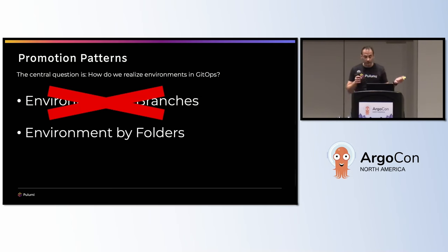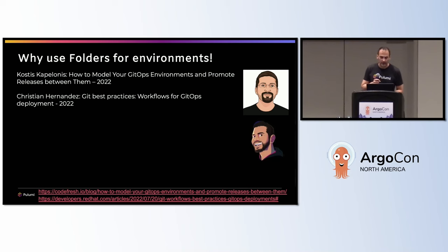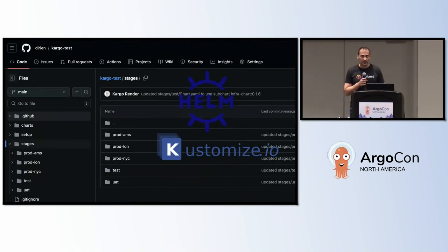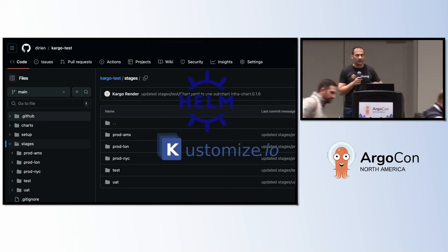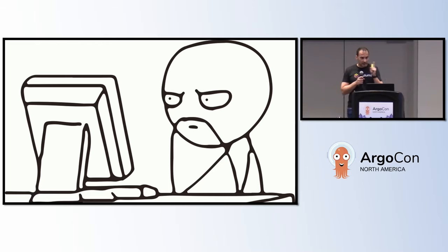The next thing suggested also from Costis is to use environments by folders. He wrote another article from 2022 on how to model your GitOps environments, and there's also an article from Christian Hernandez at Acuity on Git best practices workflows for GitOps deployment. The quintessence is: use separate folders to handle your environments — it's cleaner. Use a trunk-based development and tags for improved consistency. Then we can use what Kustomize gives us with the base folder and overlays, or Helm with different value files to overwrite properties, or even mix and match both.